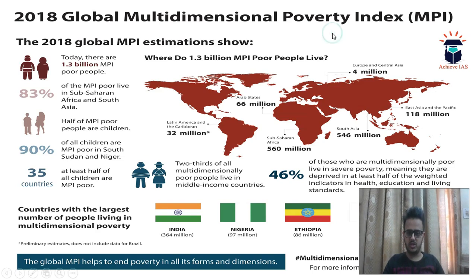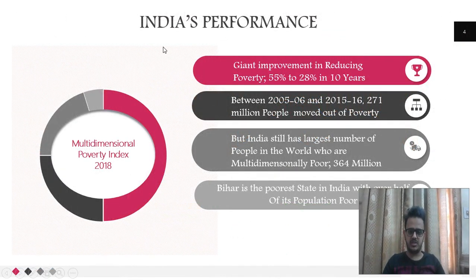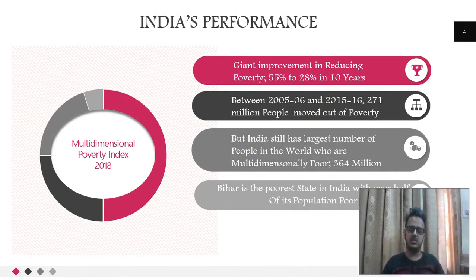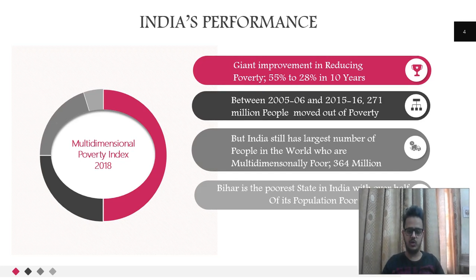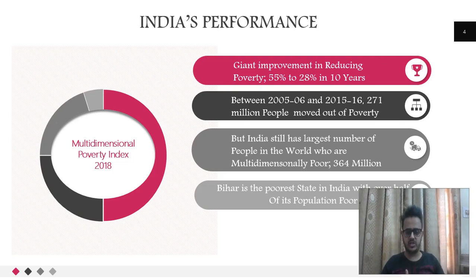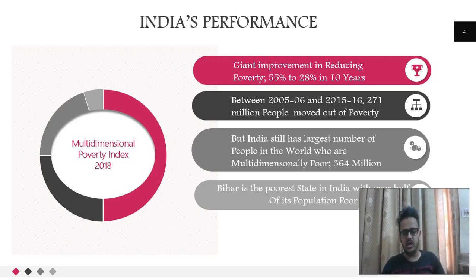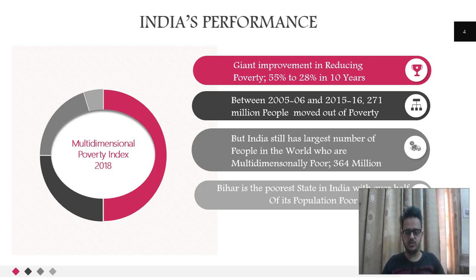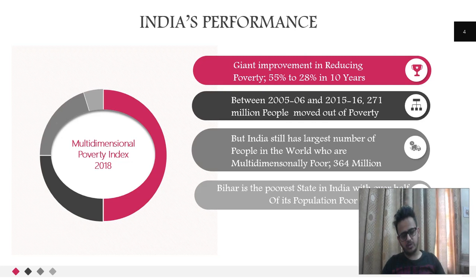However, India has shown quite impressive performance. In 2005–06, 55% of India's population was multi-dimensionally poor, but now it is just 28%. In this 10-year period from 2005 to 2015, 271 million people moved out of poverty.